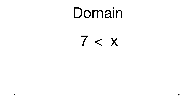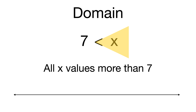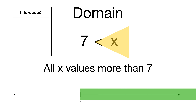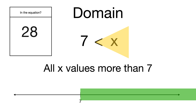Now let's look at another way domain can be written — this one has a cutoff, not a range in between. Just read the inequality: it's like a flashlight shining towards the bigger side, and x is the bigger side. So the domain means all values more than 7, going all the way to infinity. The number 1 is less than 7 so it's not in the domain. The number 28 is more than 7, so yes it's included.